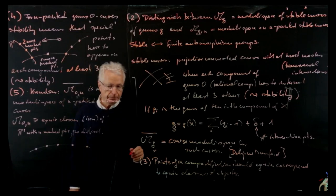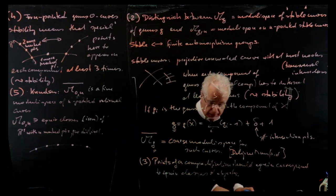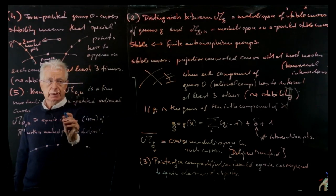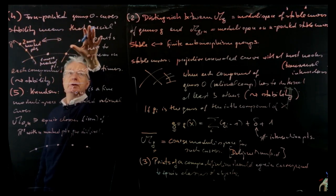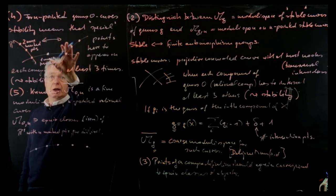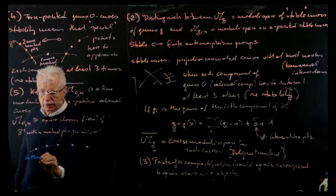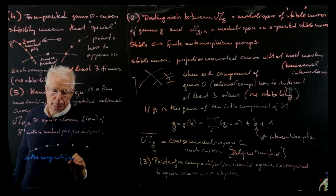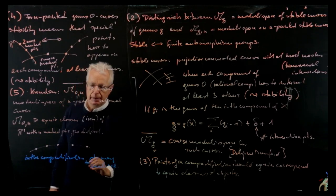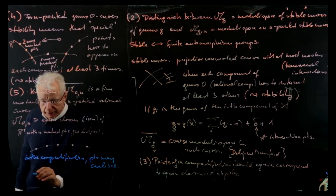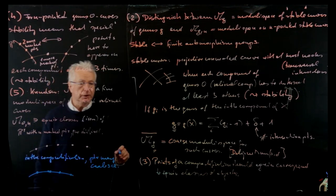When you compactify, points will come together. If you allow the concept of n-pointed genus zero stable curves, you allow several components, so points may come together in the compactification. Instead of drawing them on the hyperbola at the same point, you introduce a new component, and on this component you draw two distinct points, so just the projection on the other component is the same point. I think that's a very beautiful idea, and it works.